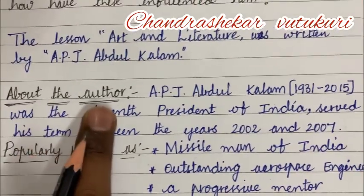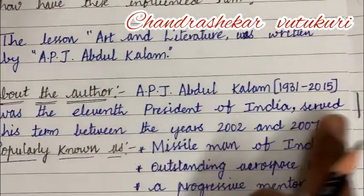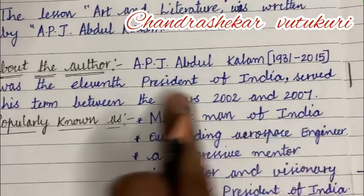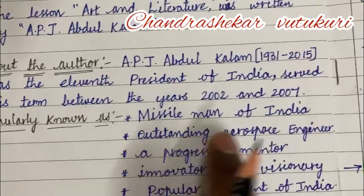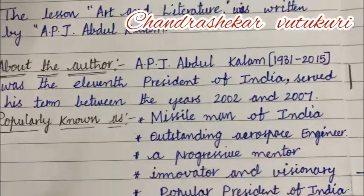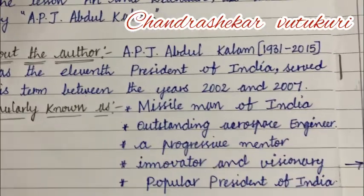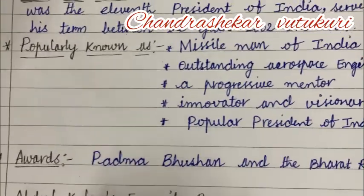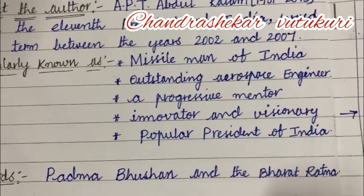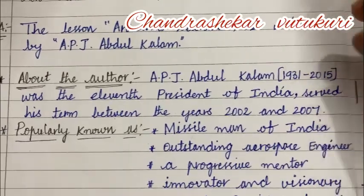I have kept a sub-heading about the author. You should write this for all five units in this manner to score better marks. You need to mention why he is popular — he is popular as a 'Missile Man of India,' an outstanding aerospace engineer, and the popular President of India. Also mention whether he has received any awards — he received the Padma Bhushan as well as the Bharat Ratna.